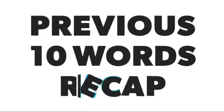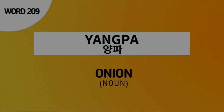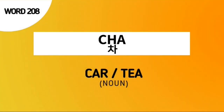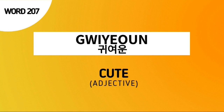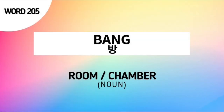Now let's proceed to the previous 10 words recap. The previous 10 words are words number 199 to 208. Don't forget our word for today — word number 209, yangpa, which means onion. Word 208: cha, which means car or tea. Word 207: kyoun, which means cute. Word 206: joesonghaeyo, which means 'I'm sorry' in a polite manner. Word 205: bang, which means room or chamber.